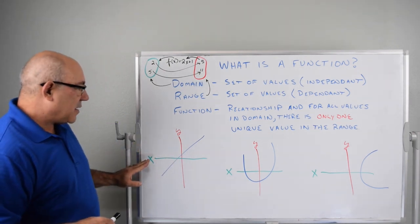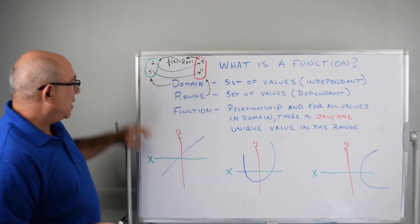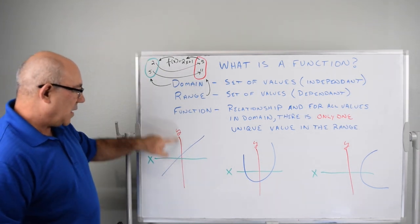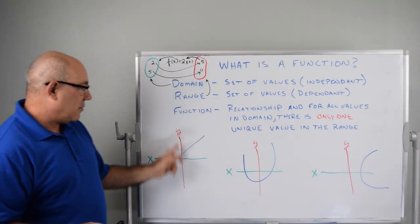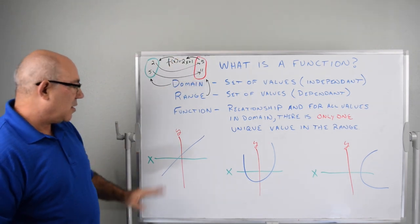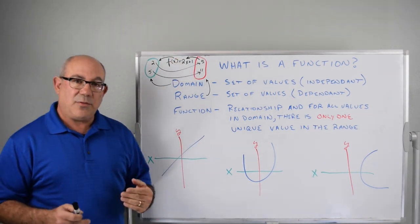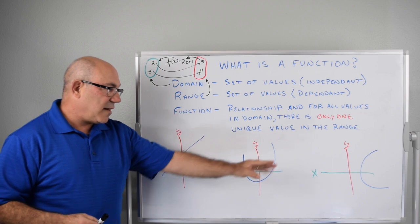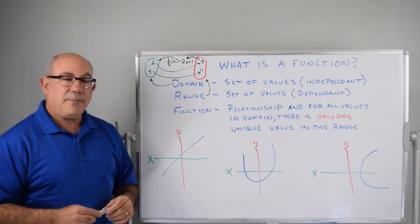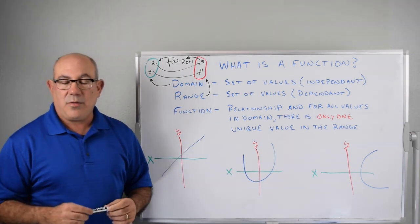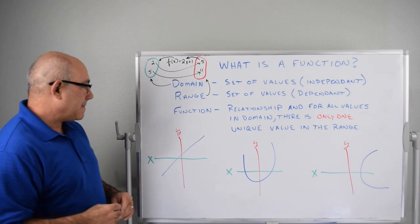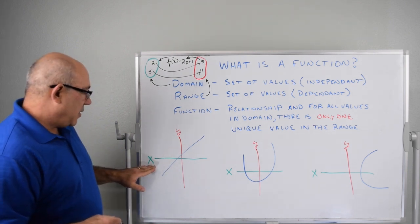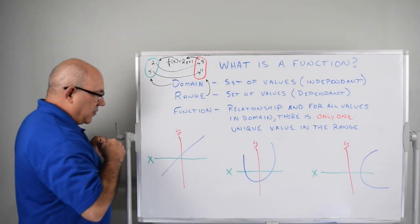So we have x, which is defined by the green line, just like it was up here. We have y defined by the red line, just like it was over here. And we have to do a test to see if we have for every value of x, which is the domain, we have one value for the range, which is y.